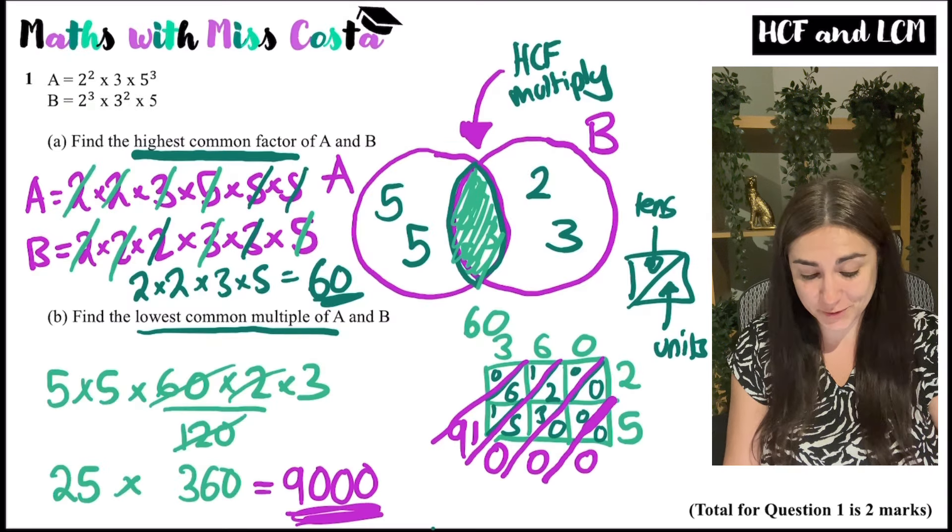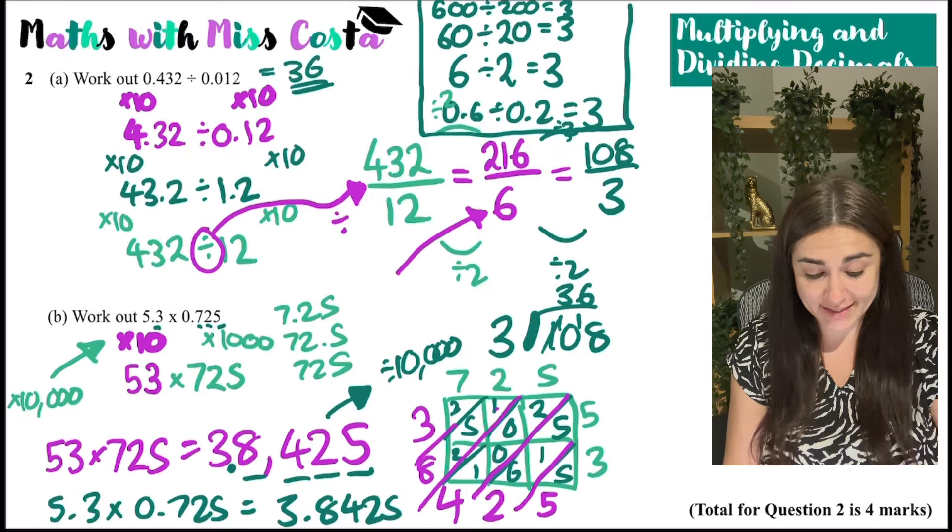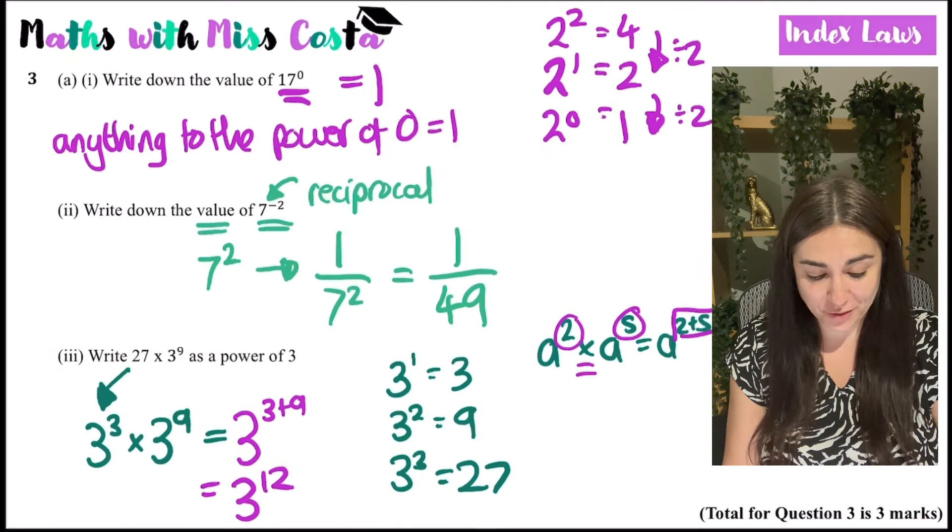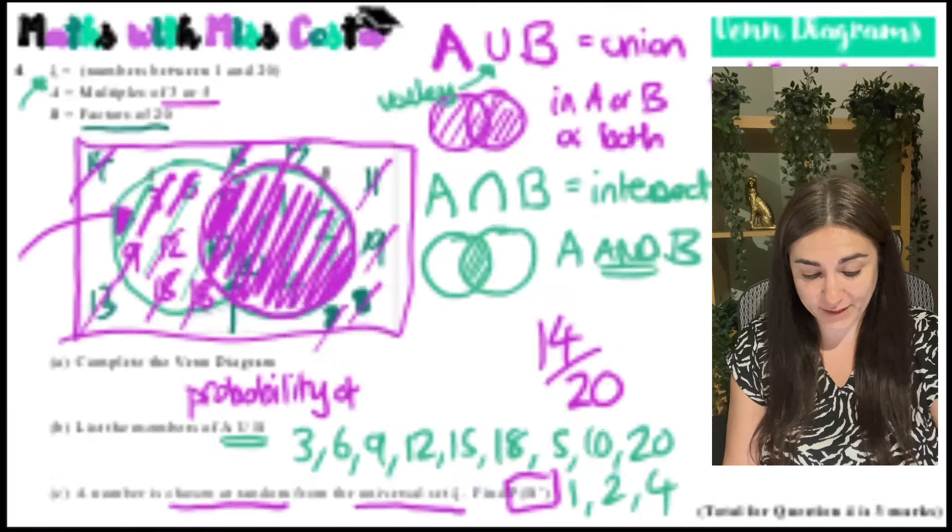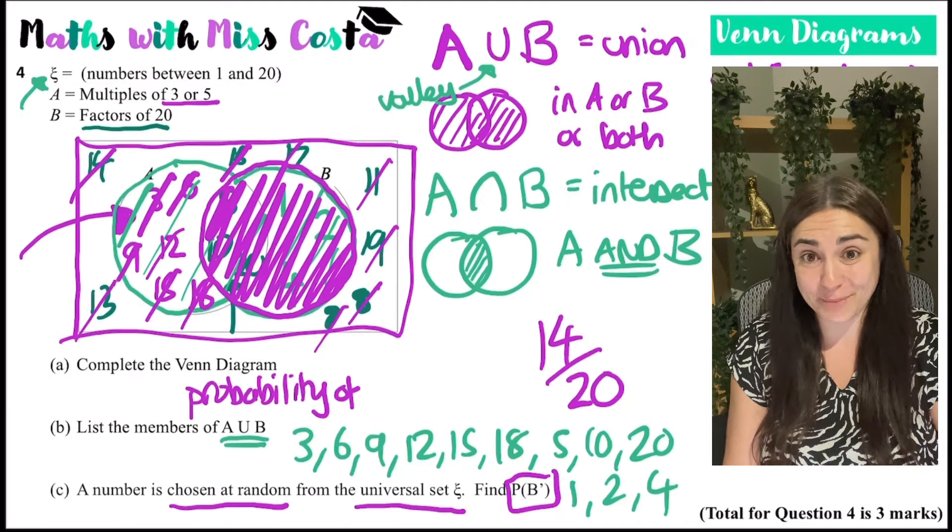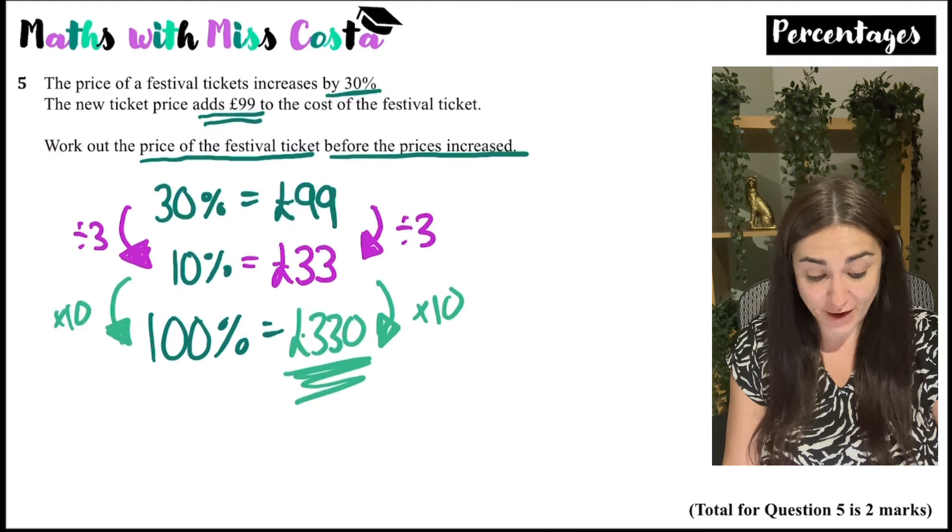So here's question one, highest common factor and lowest common multiple. Question two, multiplying and dividing decimals. Question three, index laws. Question four, Venn diagrams and probability. Question five is percentages.